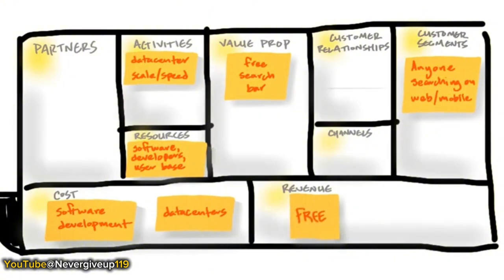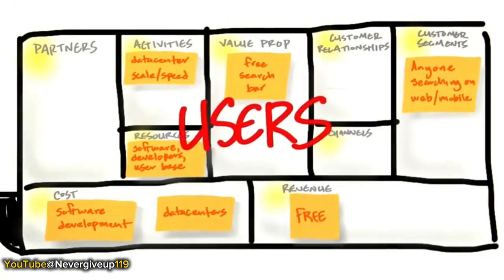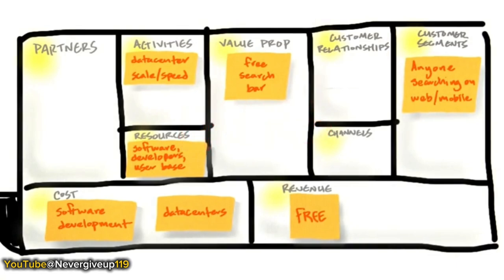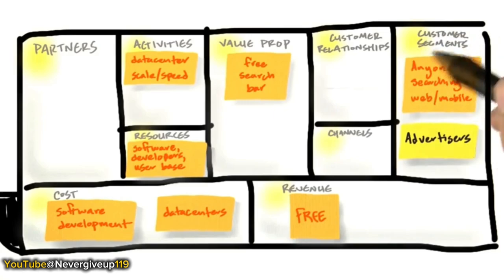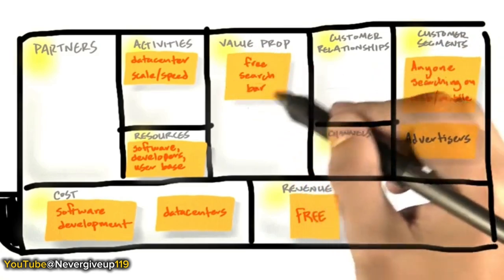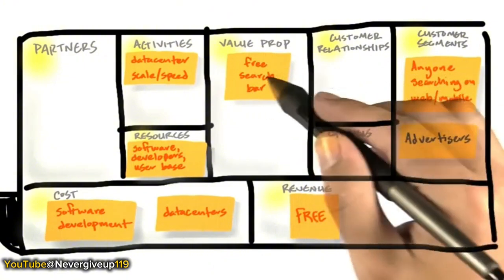Google Search is one of the most profitable businesses on the face of the earth. How can Google do that? What we've just been describing is Google acquiring users — but someone else is paying for this product. That someone else is a different customer segment called advertisers. So you have users here, and payers here. For every customer segment, there is a value proposition.